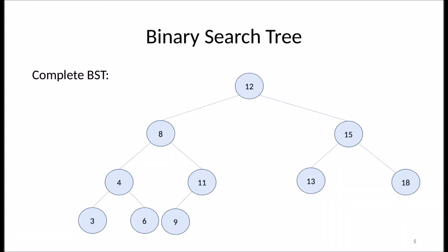Here's an example of a binary search tree. You can pick any node, check the value, and anything on the left side will be smaller, anything on the right side will be larger. The root node stores 12, so anything in the left subtree is smaller than 12 and anything in the right subtree is larger. This applies to any node — for example, node 4 also follows this rule.